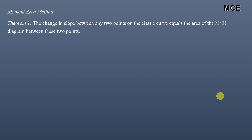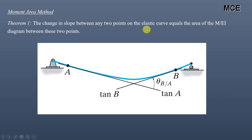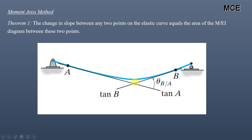The moment-area method has two terms. The first term states that the change in slope between any two points on the elastic curve equals the area of the M/EI diagram between those two points. The M/EI diagram is simply the bending moment diagram divided by EI, the flexural rigidity of the beam. So the change in slope between points A and B equals the area of the M/EI diagram between A and B.